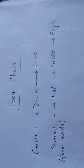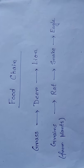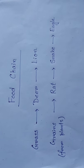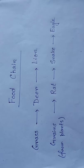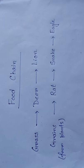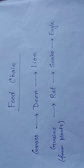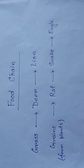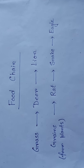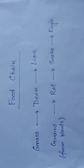We all know that a deer eats grass and a lion eats deer. So they form a chain, and this chain is called a food chain. Similarly, a rat eats grains, a snake eats the rat, and an eagle eats the snake — so they form a food chain.